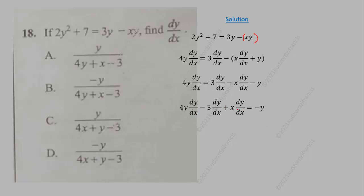To obtain this, we now group all the terms containing dy/dx on the left-hand side. We can now factor dy/dx on the left-hand side to get this. Now we just divide through by 4y plus x minus 3, and that will give us the answer to be negative y over 4y plus x minus 3.